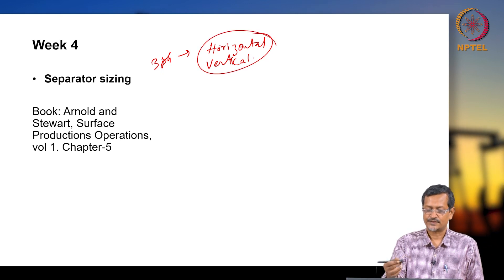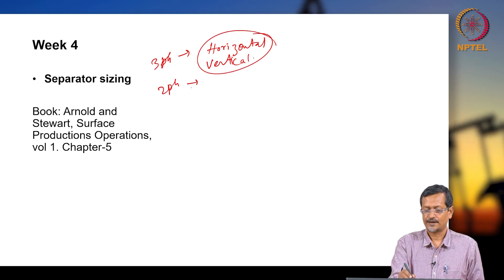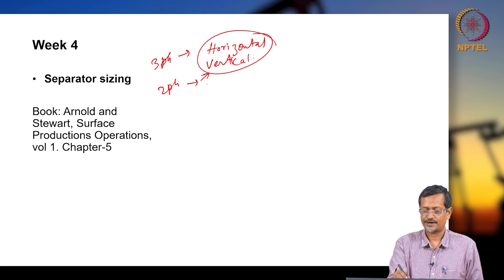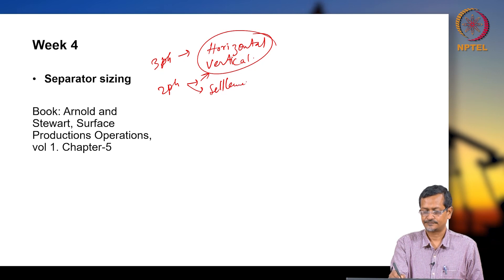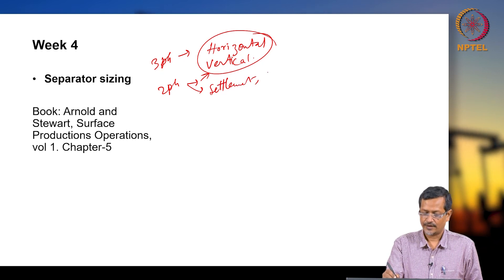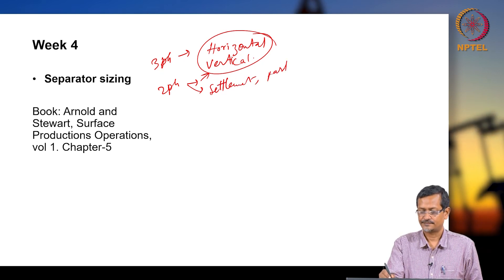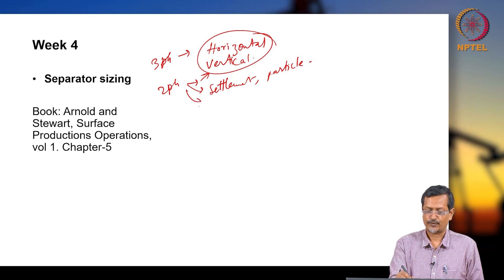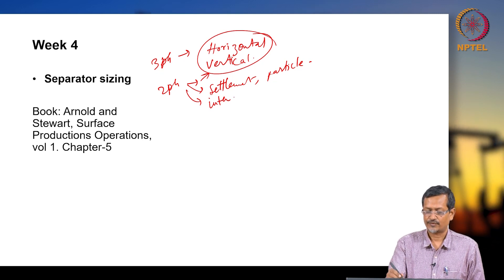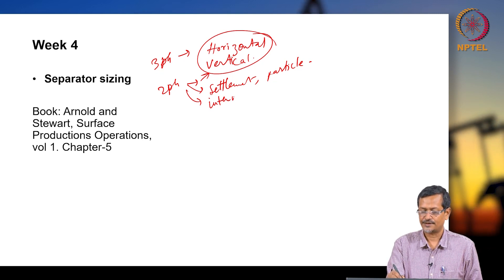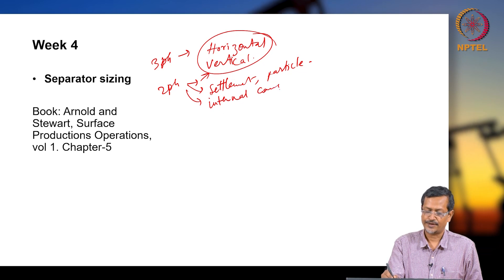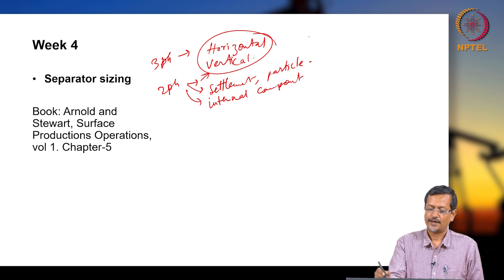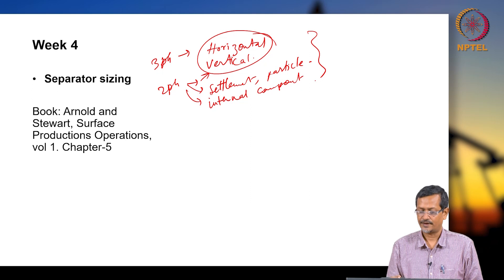Previously we have discussed two-phase separator — two-phase horizontal and vertical. We discussed settlement, particle size, internal components, and for three-phase we also discussed internal components and more theoretical parts.